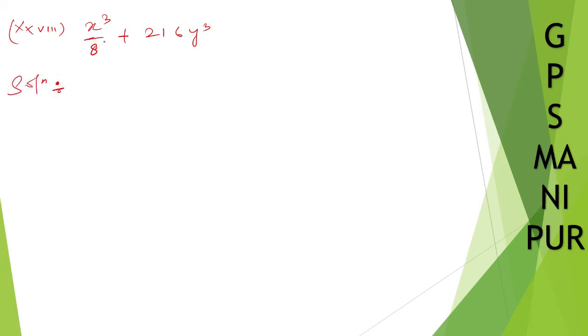For the solution: x cubed by 8 I can write as x cubed by 2 cubed, which is (x/2) whole cube. And 216 is the cube of 6, so 216y cubed is (6y) whole cube.